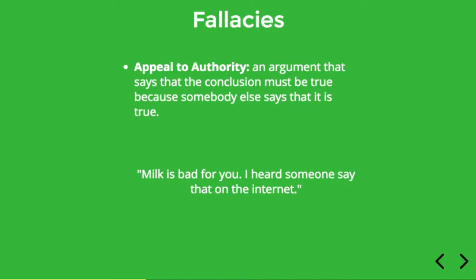Appeal to authority is an argument that says the conclusion must be true because somebody else says that it's true. For example: milk is bad for you — I heard someone say that on the internet. This is a fallacy because the mere fact that someone says something on the internet obviously does not make it true. Now, occasionally it can be a good thing to appeal to an authority — if the authority is an expert, like a medical doctor, then it might be sensible to listen to their opinion. But if the supposed authority being appealed to is not really knowledgeable about the subject matter, then it becomes a fallacy, which we will call appeal to authority, or appeal to an ignorant authority.